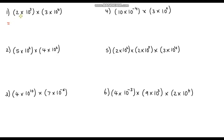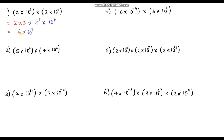Question 1: we've got 2 times 10 to the power 3, times 3 times 10 to the power 4. Multiplication is commutative, so I'm going to group together the 2 and the 3, and separately multiply the powers of 10. 2 times 3 is 6. Then 10 to the power 3 times 10 to the power 4 — adding the indices — gives 10 to the power 7. So we've got 6 times 10 to the power 7. Notice this is already in standard form because 6 is between 1 and 10. So this is our answer.